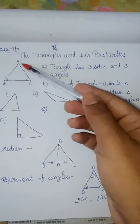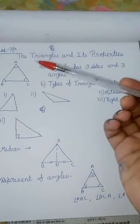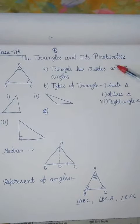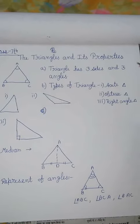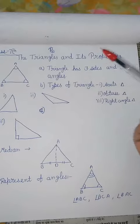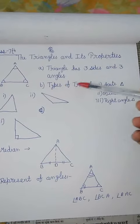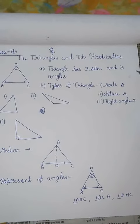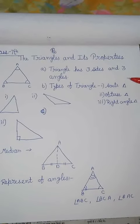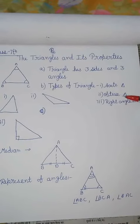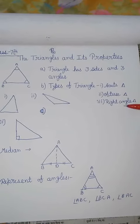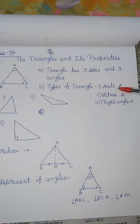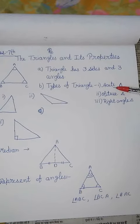Second property is types of triangles. Types can be categorized by angles: acute angle, obtuse angle, and right angle. What is acute angle? Acute angle means a triangle where all angles are less than 90 degrees.